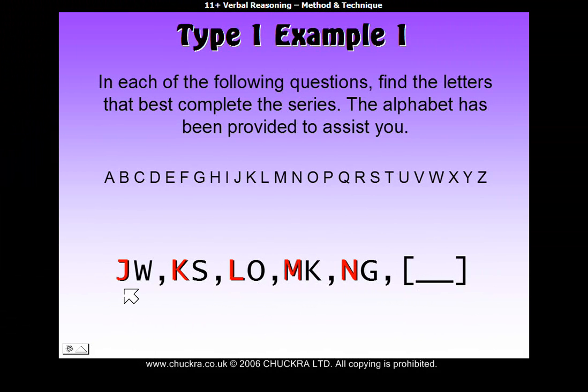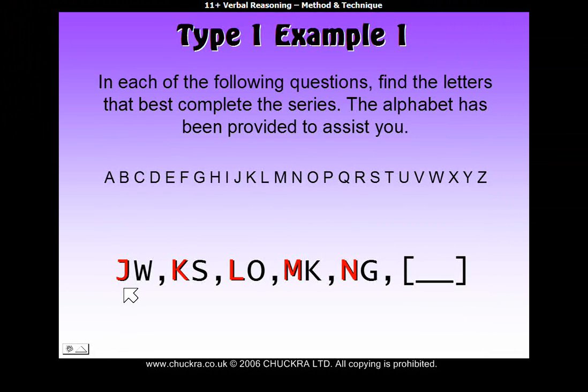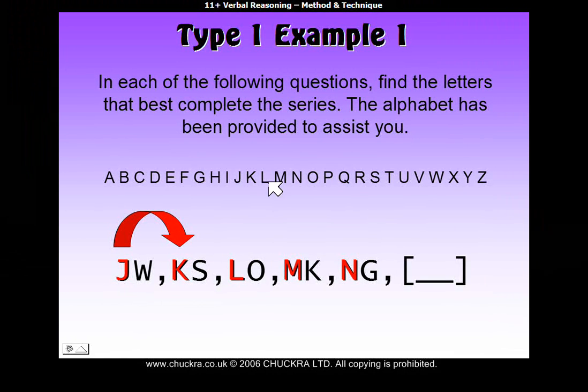First, let's look at the first letter of each pair, marked here in red. How do we get from J to K? Well, let's have a look at our alphabet line. To get from J to K, we're just going up one letter in the alphabet, so plus 1.